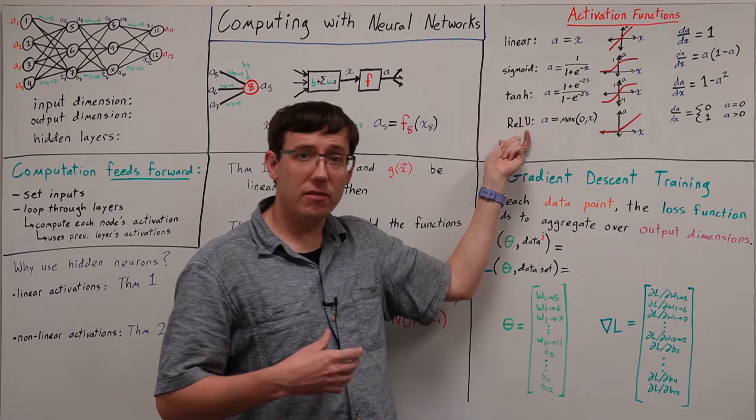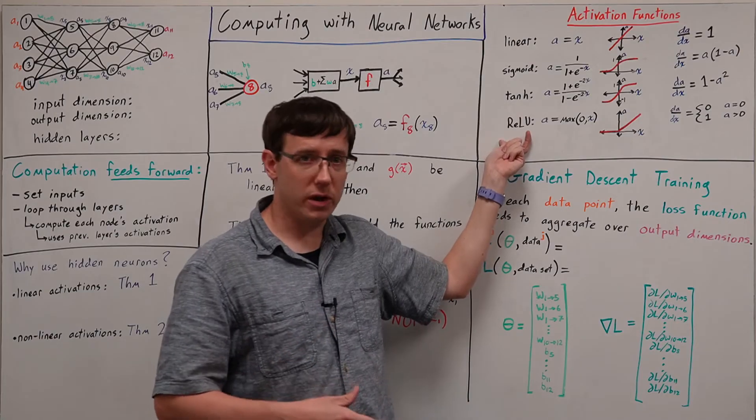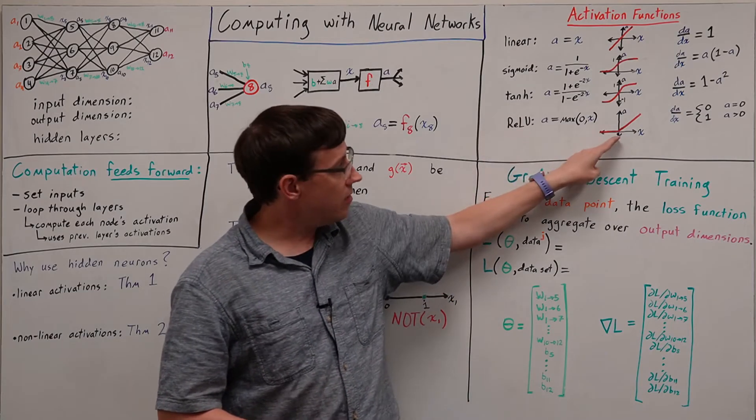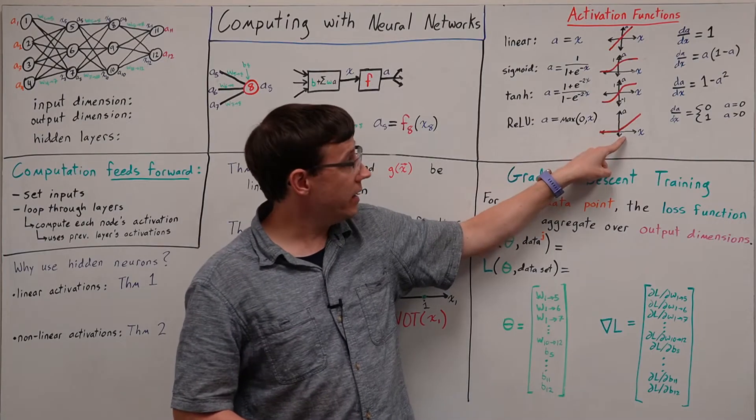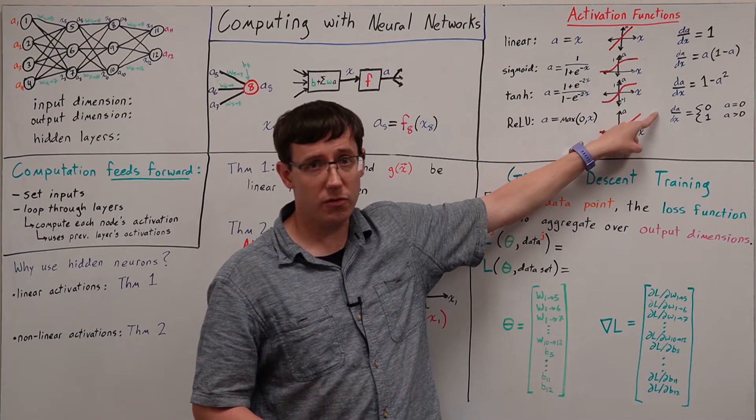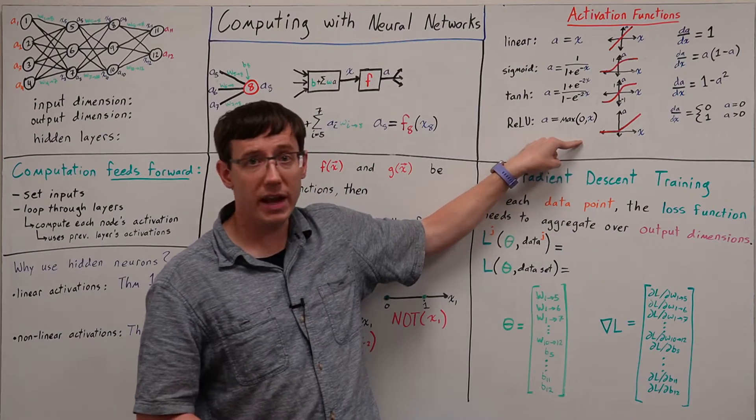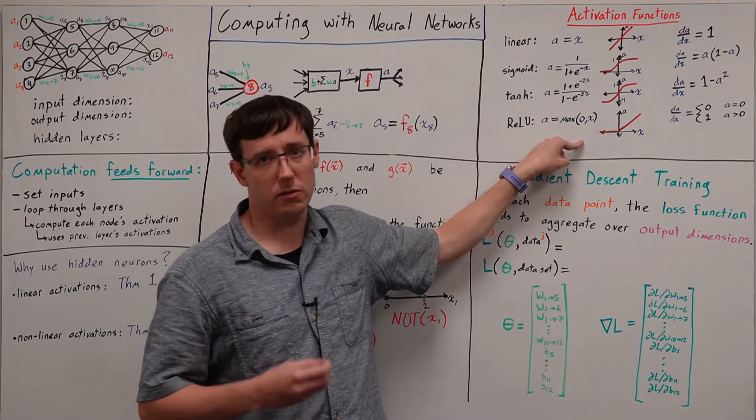And also we have the rectifier linear unit, which behaves like a linear activation function when its input is positive, but if the weighted sum of inputs is negative, the neuron will output 0.